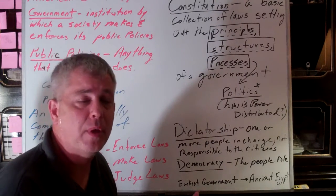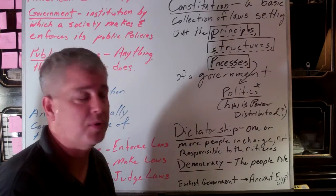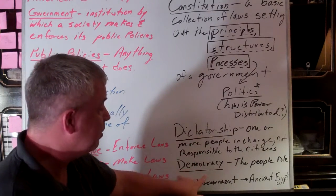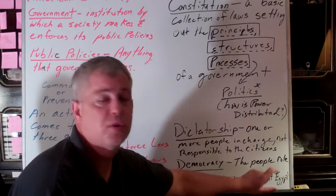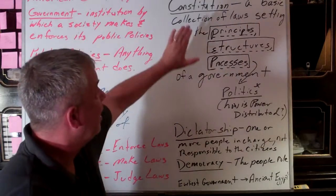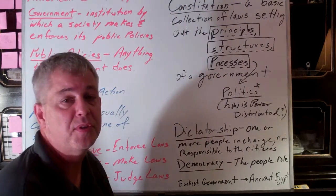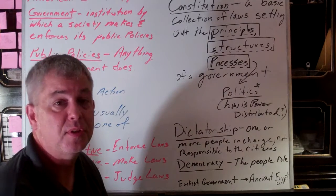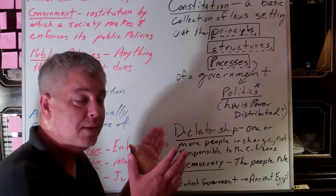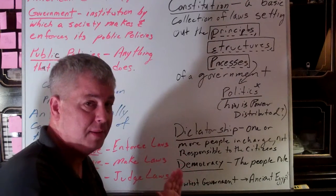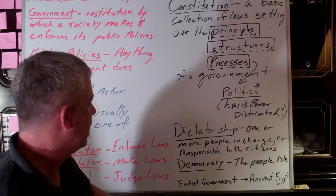Dictatorships can change their rules at will and frequently do so. Democracies, on the other hand, make sure that the people themselves rule, and that's where most democracies in the world actually have a constitution, whether it's written or in some cases not — and we'll talk more about that in class.